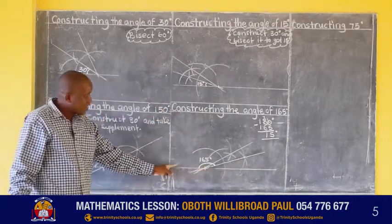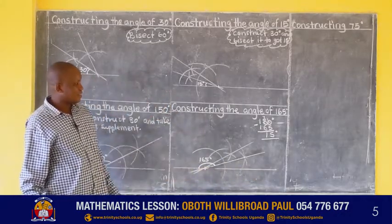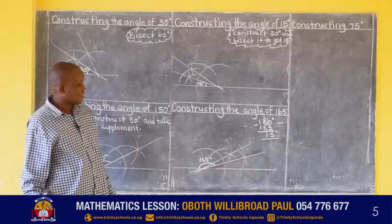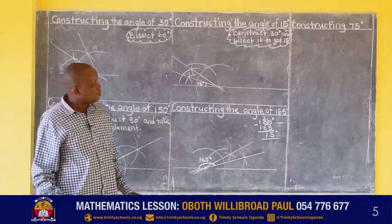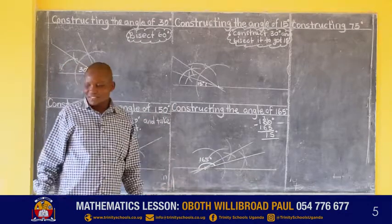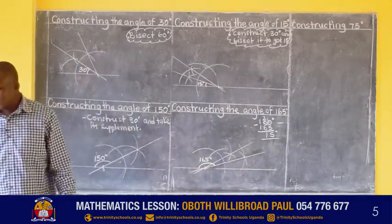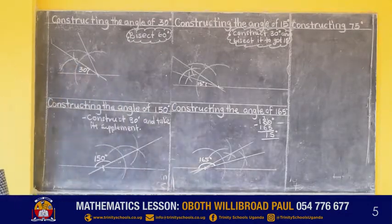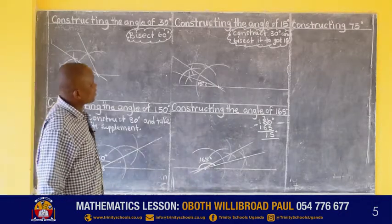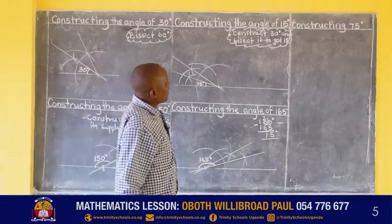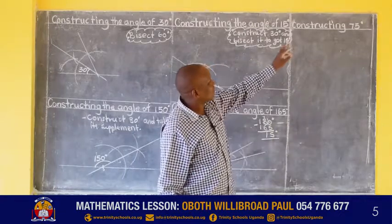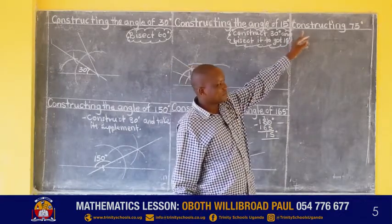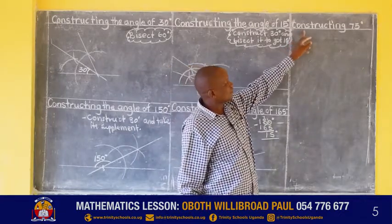That's not the angle we are asked to construct — we want 165. So from this line, curving this side, the angle constructed is 165 degrees, because when we add 165 plus 15 we get angles on a straight line. Use your compass, ruler, and a sharp pencil to play with these angles.